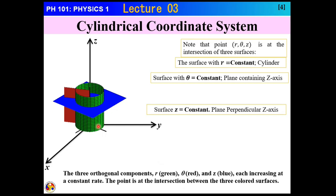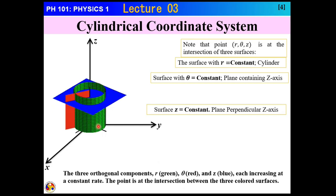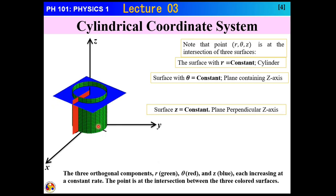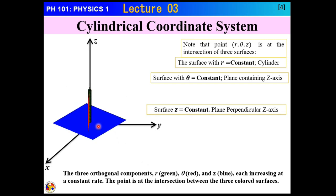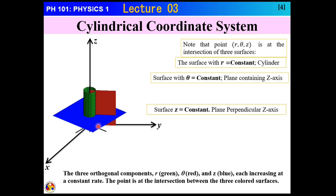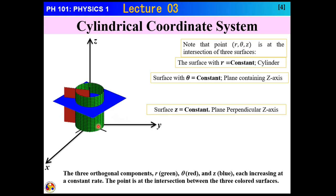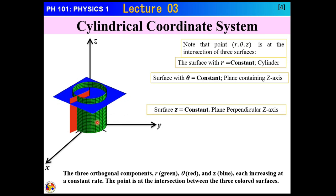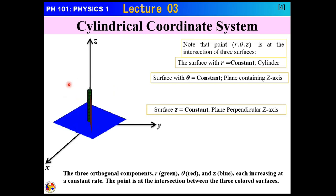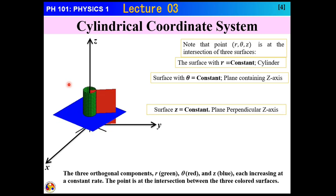When we talk about surfaces, they can be curved as well. We generally think of a plane as not curved, but surfaces can include all kinds including curved ones. Here we are showing three surfaces: one is curved and two are planar.